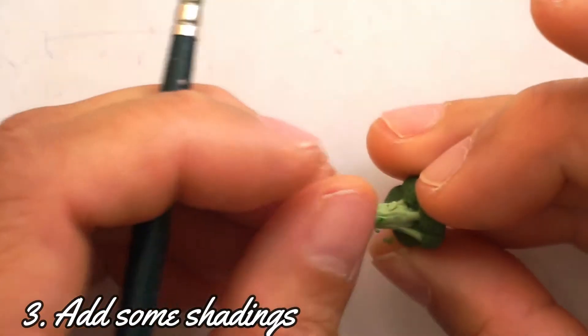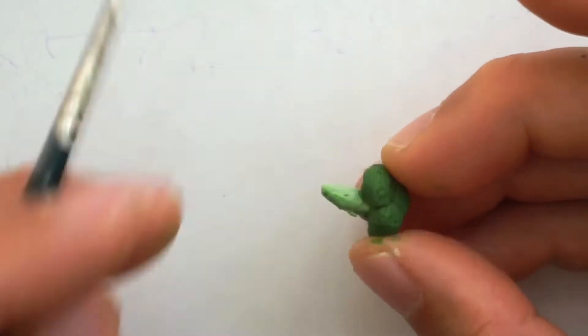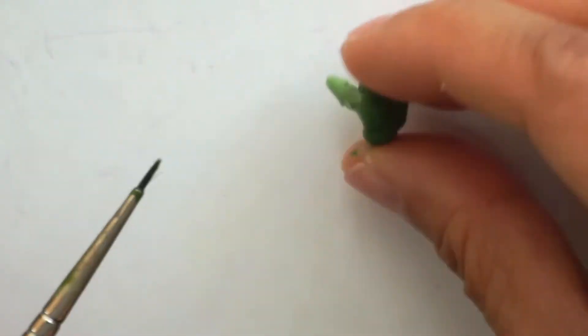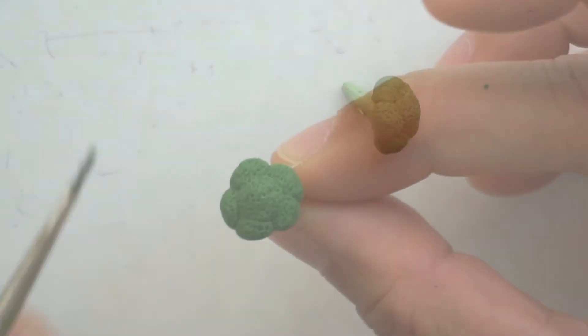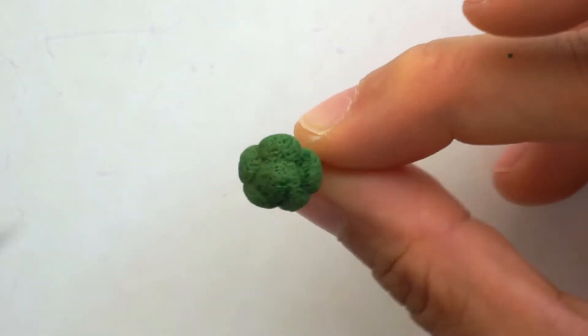Once it is cool, you can add shadings to your broccoli. I use watered down dark green acrylic paint to add the darker shades on the stock and also on the florets. Lastly, let the paint dry and seal it with matte varnish.